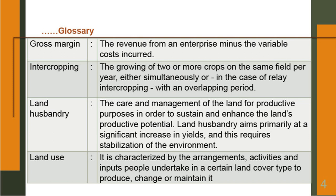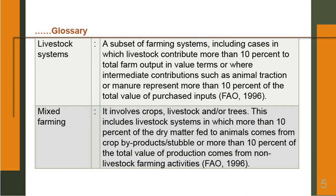Land husbandry: the care and management of the land for productive purposes in order to sustain and enhance the land's productive potential. Land husbandry aims primarily at a significant increase in yields and this requires stabilization of the environment. Land use: it is characterized by the arrangements, activities and inputs people undertake in a certain land cover type to produce change or maintain it. Livestock systems — a subset of farming systems including cases in which livestock contribute more than 10 percent to the total farm output in value terms or where intermediate contributions such as animal traction or manure represent more than 10 percent of the total value of purchased input.